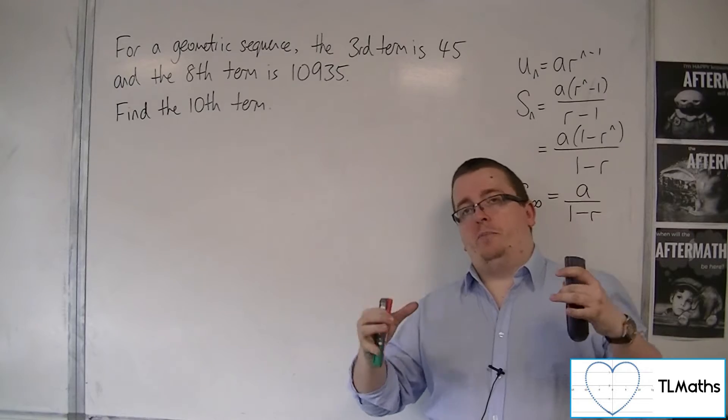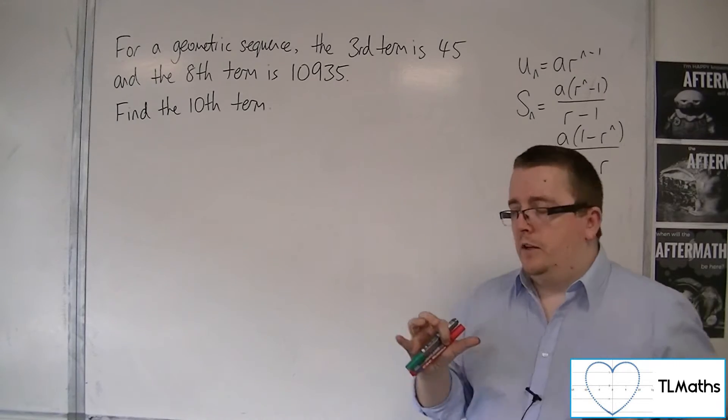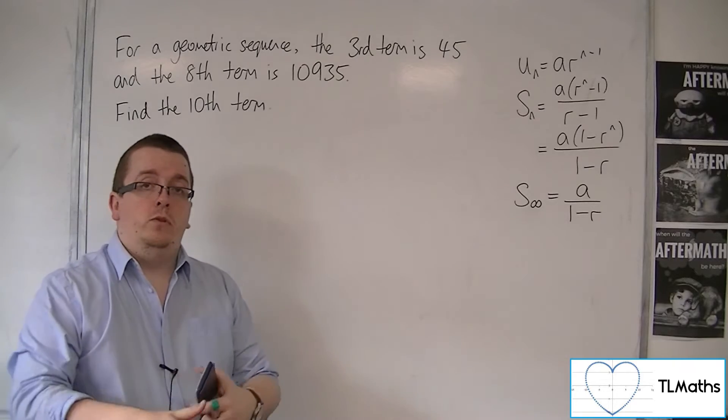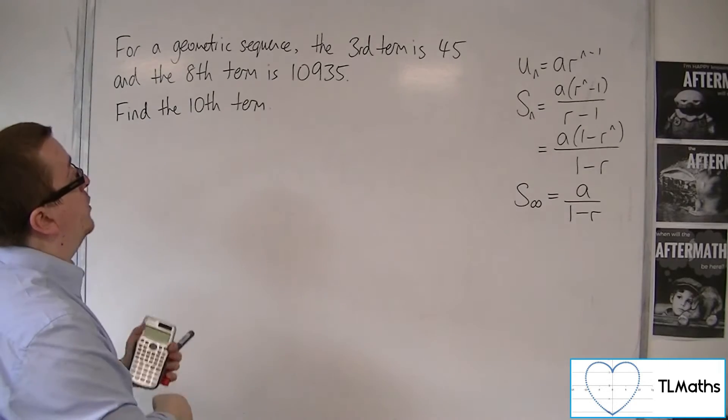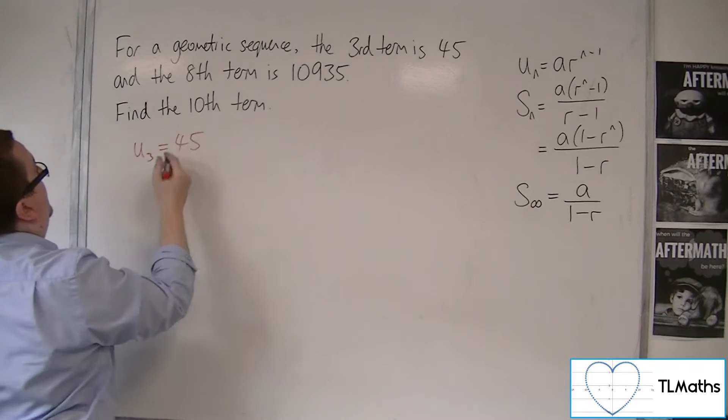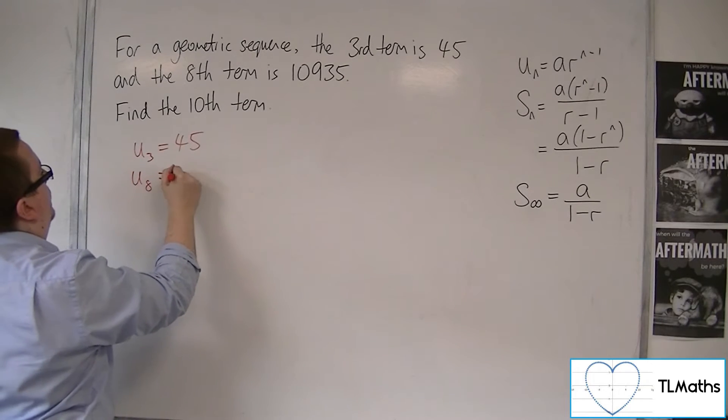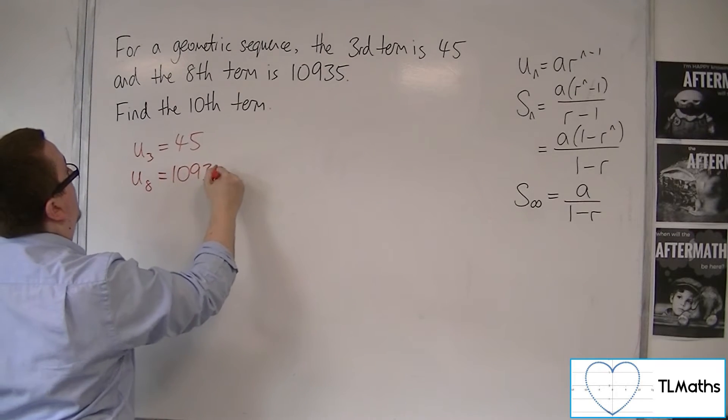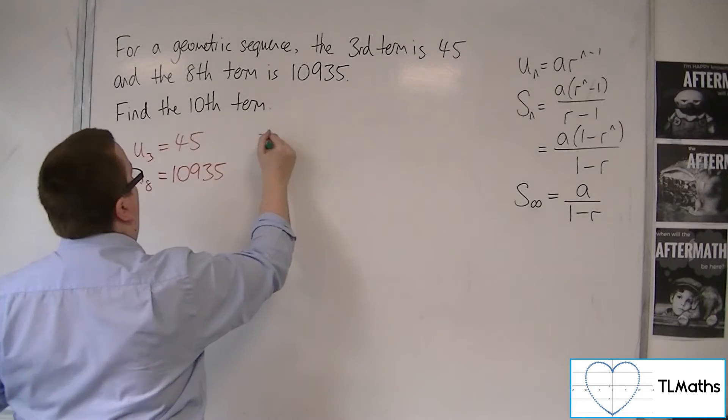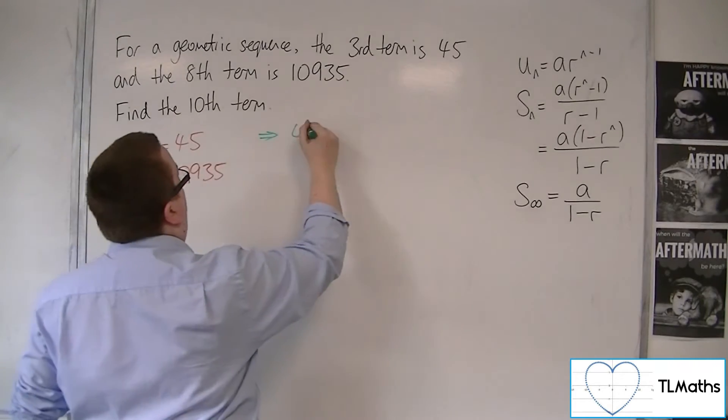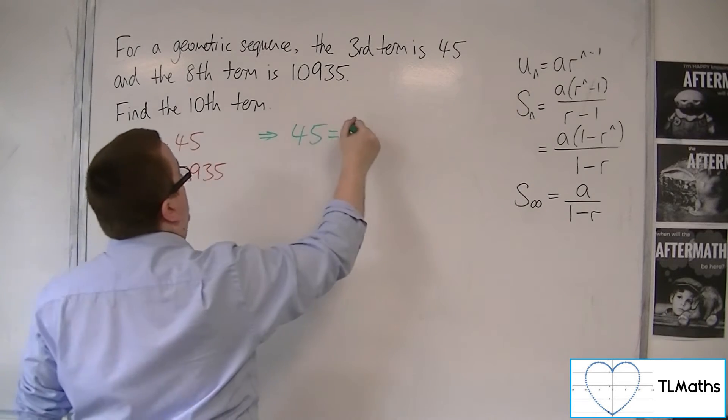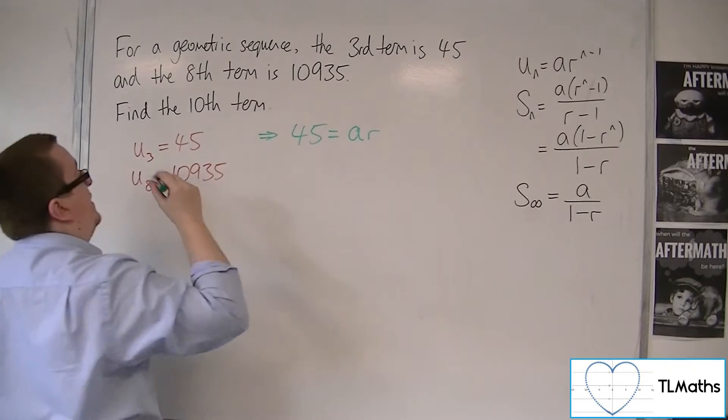In so doing, we want to start off by finding A and R. So we've got to convert these two bits of information into two equations to work with. So if the third term is 45 and the eighth term is 10,935, then what this equation is telling me is that 45, using this formula here, is equal to A times R to the n minus 1.